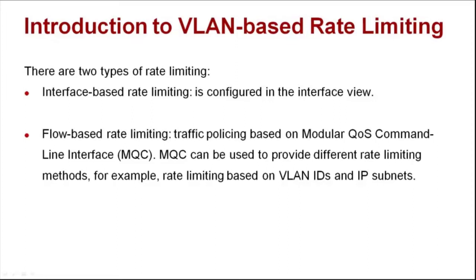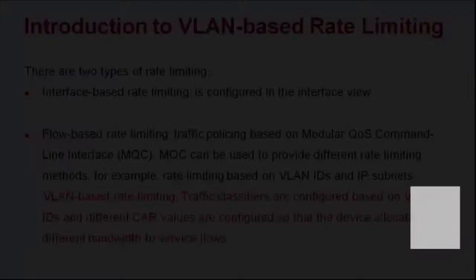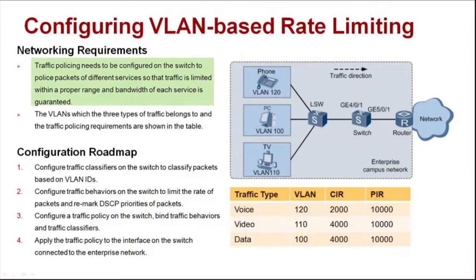Now let's see VLAN-based rate limiting. Traffic classifiers are configured based on VLAN IDs and different CAR values are configured so that the device allocates different bandwidth to service flows. Traffic policing needs to be configured on the switch to police packets of different services, so that traffic is limited within a proper range and the bandwidth of each service is guaranteed. Voice, video, and data services are transmitted in VLAN 120, VLAN 110, and VLAN 100 respectively.